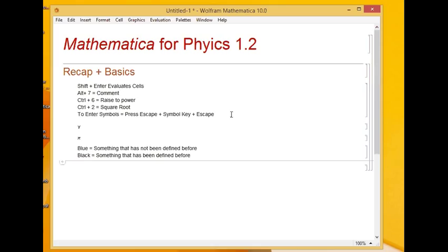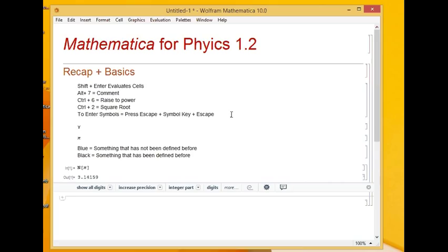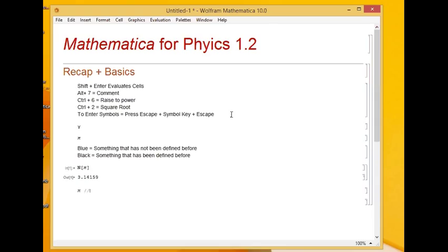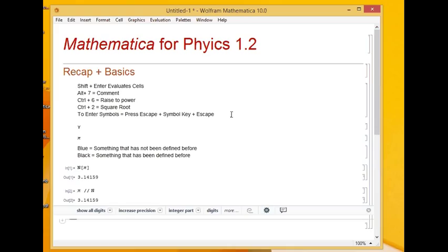Let's see how to apply functions. Suppose I want to see the numerical value of pi. The function for evaluating numerical value is N. You pass arguments to a function via square brackets. So inside I enter pi and press shift enter to evaluate the cell. This gave me the numerical value of pi. Another way is to write pi and then slash slash and then N. This is the postfix notation which is very useful. This gave us the same result. There are multiple ways of using functions. I prefer the second one.